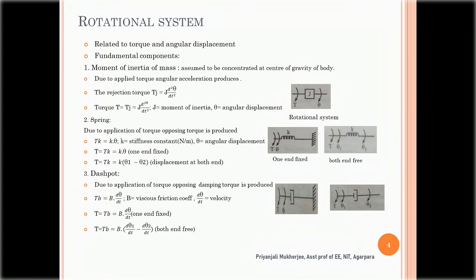Next is the rotational dashpot or damper. When torque is applied to the dashpot, it is opposed by the damping torque T_B, where T_B equals D·dθ/dt, with D being the viscous friction coefficient and dθ/dt the angular velocity. If both ends of the dashpot are free with different angular displacements theta1 and theta2, then T_B equals D·(dθ1/dt minus dθ2/dt).